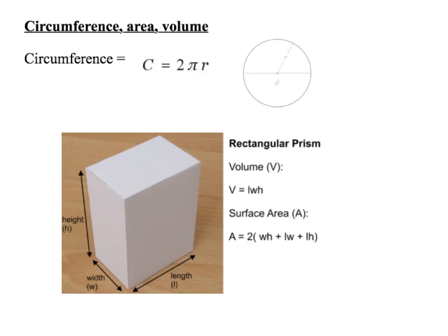You could be asked to calculate the circumference of a circle or a sphere — the circumference of a circle is 2πr. You could be asked to calculate the surface area or the volume of a cuboid or a cube. The volume is length times width times height. The surface area is 2 times (width times height, plus length times width, plus length times height).